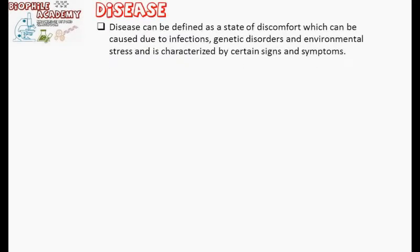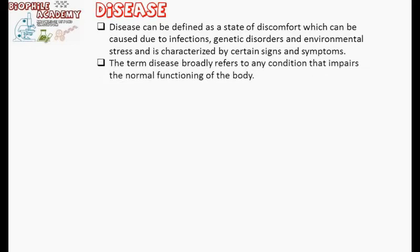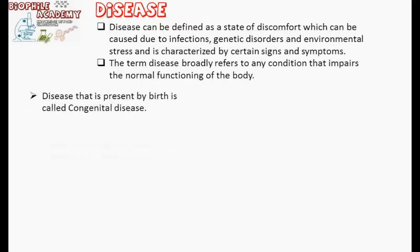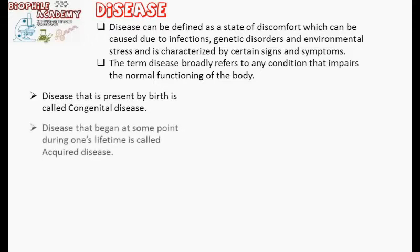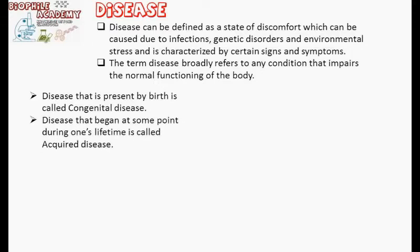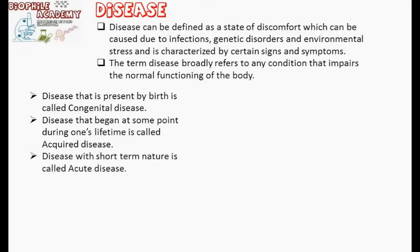Now let us know what is a disease. Disease can be defined as a state of discomfort which can be caused due to infections, genetic disorders, and environmental stress, and is characterized by certain signs and symptoms. The term disease broadly refers to any condition that impairs the normal functioning of the body. Disease present by birth is called congenital disease; disease that began at some point during one's lifetime is called acquired disease; disease with short-term nature is called acute disease.